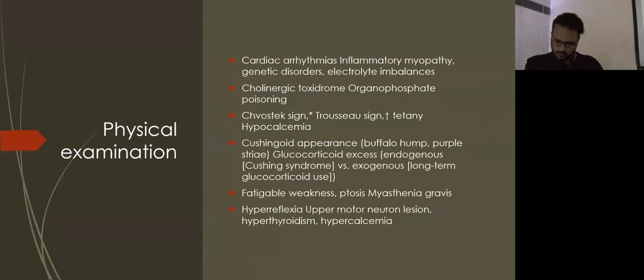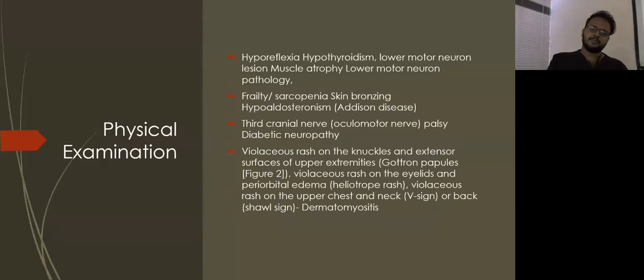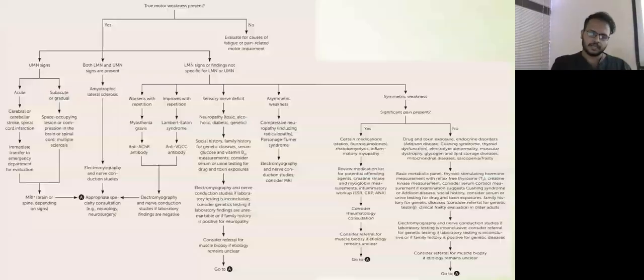Physical examination findings: cardiac arrhythmias can be seen in inflammatory myopathy. Cholinergic toxidrome with weakness - think OP poisoning. Cushingoid appearance - think Cushing syndrome. Fatigable weakness with ptosis - myasthenia gravis becomes more likely. Hyperreflexia - UMN lesion, hypothyroidism, or hypercalcemia. Hyporeflexia - hypothyroidism. If there's frailty, sarcopenia, skin bronzing - hypoaldosteronism can be considered.